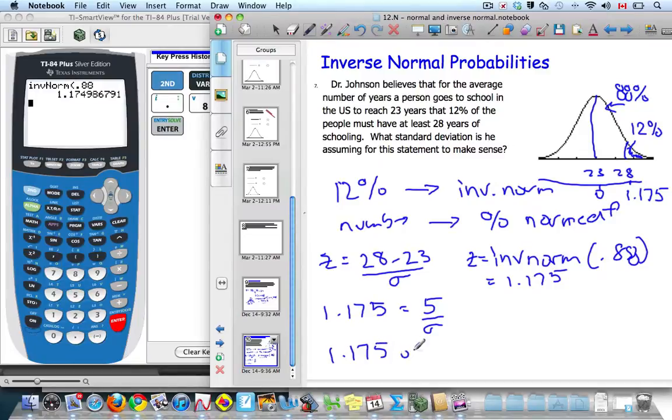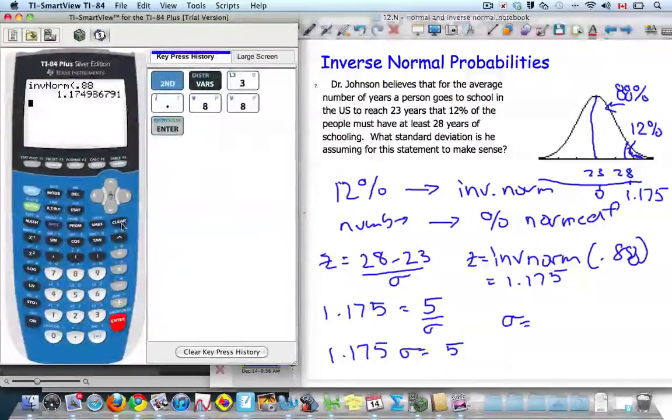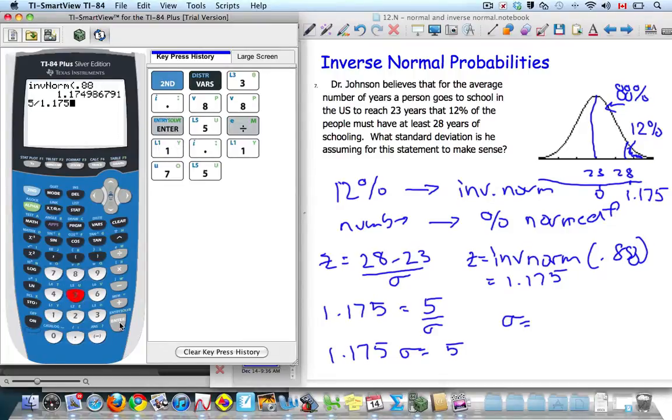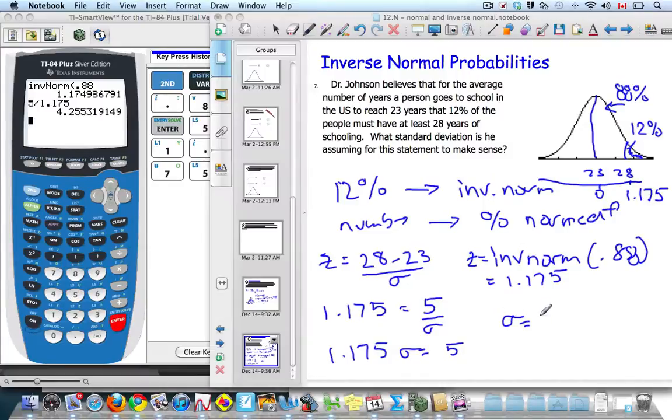I'm going to divide both sides by 1.175. And I can't do that in my head, so I'm going to go 5 divided by 1.175. And my standard deviation will be 4.26. So here's an example of being given a percentage to find your Z-score to find what you're looking for.